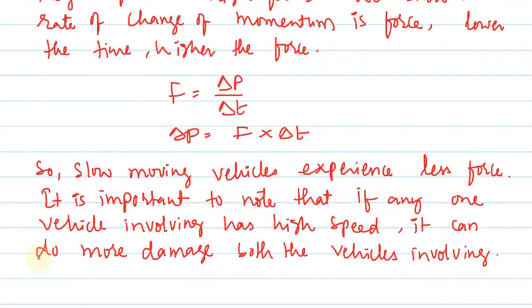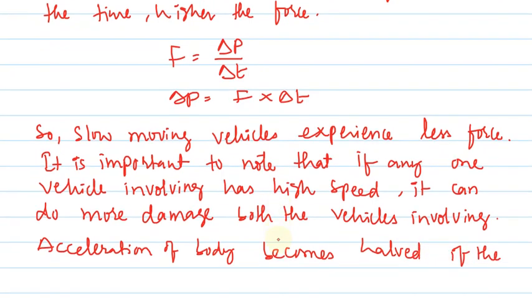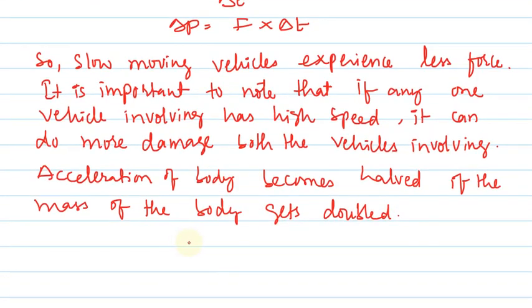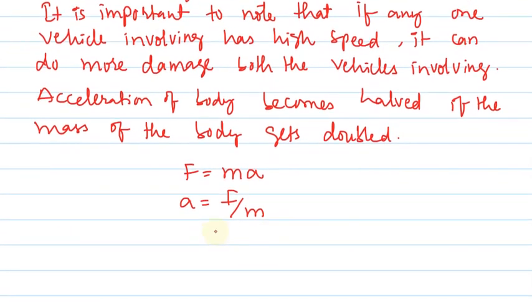Acceleration of body becomes halved if the mass of the body gets doubled. The relation is F is equal to ma, so a is equal to F/m. Force is constant, so a is inversely proportional to mass. Lesser acceleration when mass is doubled, acceleration becomes halved.